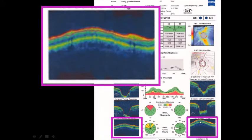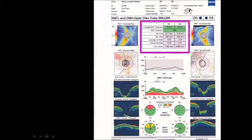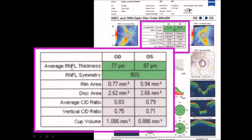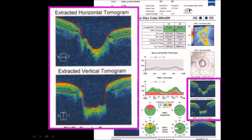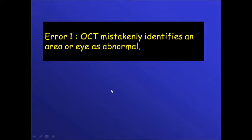We need to check that the segmentation is correct — that the machine correctly identified the retinal nerve fiber layer. We can see the different parameters of the retinal nerve fiber layer and the disc. There is also a vertical and horizontal cross-section of the nerve, which is important to verify that the machine correctly identified the end of the retinal pigment epithelium and Bruch's membrane.